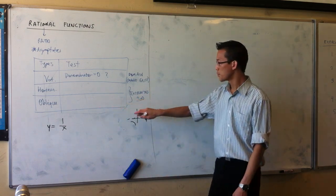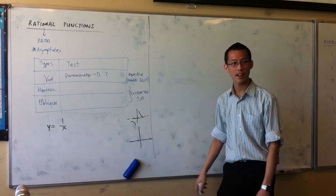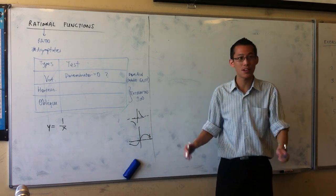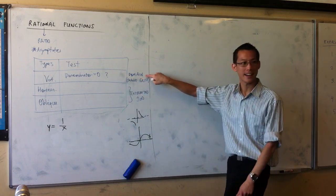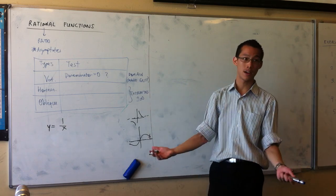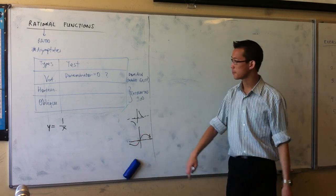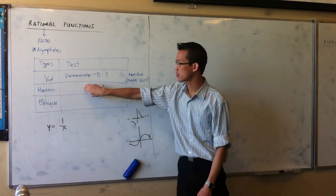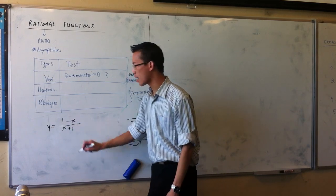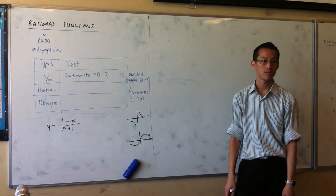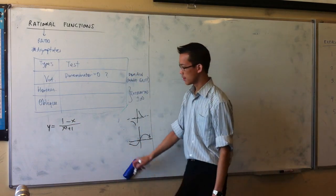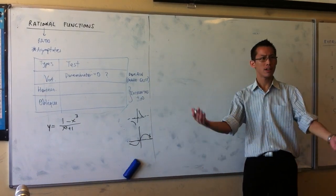That asymptote doesn't tell you anything about what the graph is doing in the middle — the graph ignores the asymptote in the middle. And it's the same with oblique asymptotes. So that's why sometimes you'll do graphs where the graph will actually cross an asymptote. You thought asymptotes can't be crossed — but you can't cross vertical asymptotes because the function can't exist there. Horizontal and oblique asymptotes you can cross them, because they just tell you about the ends, not about the middle. So how do you know if it's got a horizontal or an oblique asymptote?